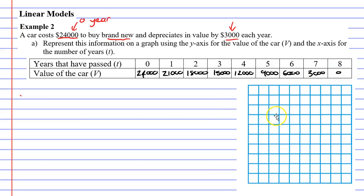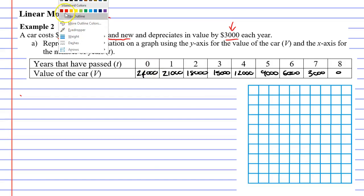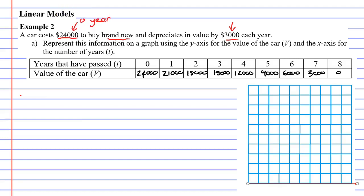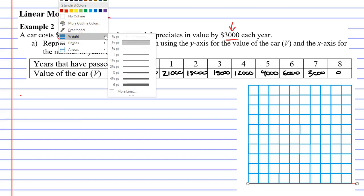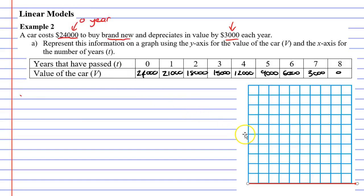So we need to put our axes on the graph, and I'm going to do that using a line tool. So I want my horizontal axis, which is usually x, but in this case, it's going to be t for time. And then I'm going to put in my vertical axis, which is going to be the value of the car. Our horizontal axis is t, and our vertical axis is v for the value of the car.